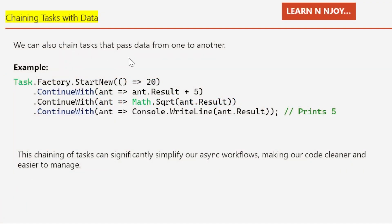We can also chain tasks that pass data from one to another. In this more complex example, task.Factory.StartNew with a lambda returns 20. Then ContinueWith accesses that result and adds 5, giving 25. A third task then accesses the second task's result and performs a square root operation — math.Sqrt(ant.Result) — calculating the square root of 25 to get 5. A fourth task then prints the result to the console window using console.writeline.